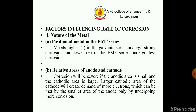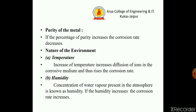A large cathodic area creates demand for more electrons, which can be met by the smaller anodic area only by undergoing more corrosion. The second factor is purity of metal — if the percentage of purity increases, the corrosion rate will decrease.